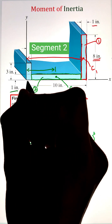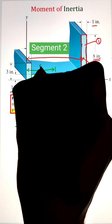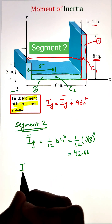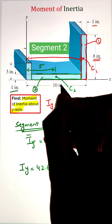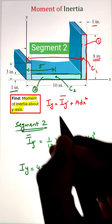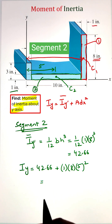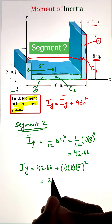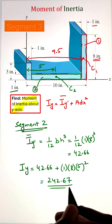Next, we have to figure out the distance between the centroid of this individual rectangle to the y-axis, which is five inches. Plugging those values into the formula, we get the value of moment of inertia of this rectangle about the y-axis equal to 242.67 inch raised to the power four.